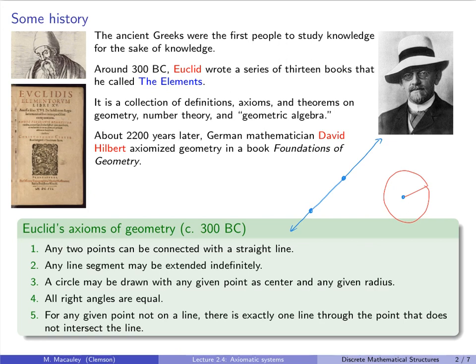Four, all right angles are equal. So if you have a right angle like this and another one over here, we say that those things are equivalent or, as Euclid would say, equal.